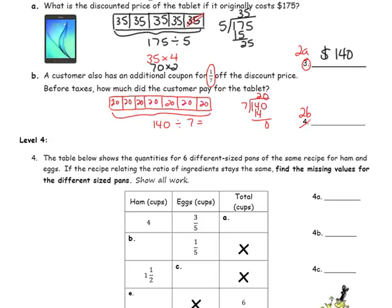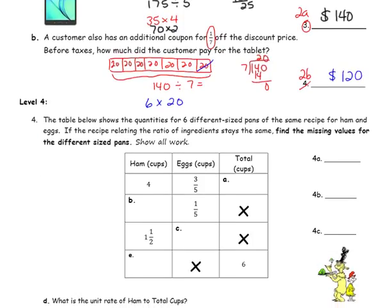We get to take one seventh off, so we are paying six sevenths. So we have 6 times $20 — that's 6 times 2 with a zero — and that is $120 for the final sale price.